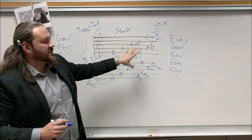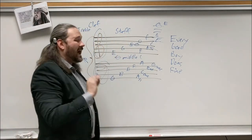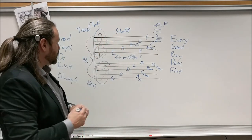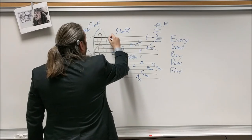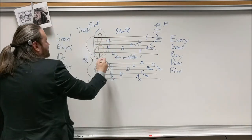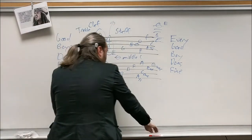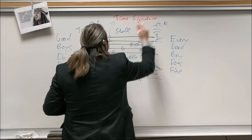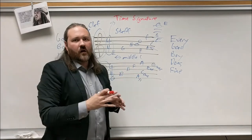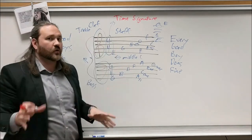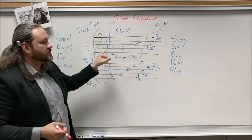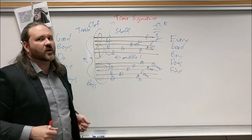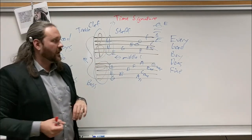Where a note is placed on the staff tells you what note to play; how the note looks tells you what rhythm to play. Usually at the beginning of a staff you get a time signature — it looks like two numbers stacked, like 4 over 4. The time signature tells you the grouping of rhythms: the top number tells you how many beats are in a measure, and the bottom number tells you what note value gets the beat.